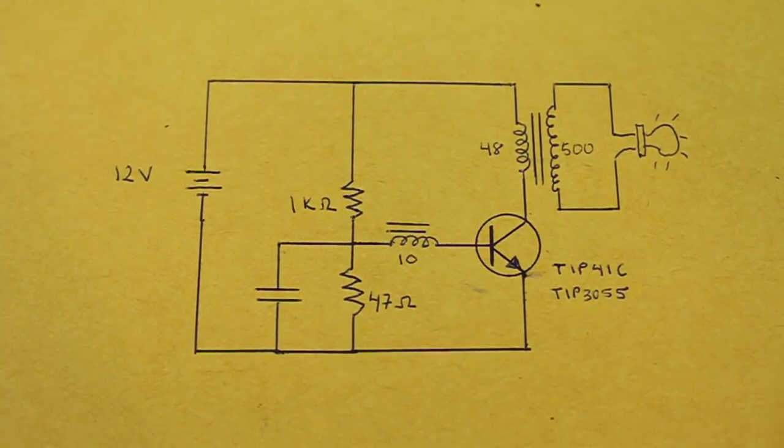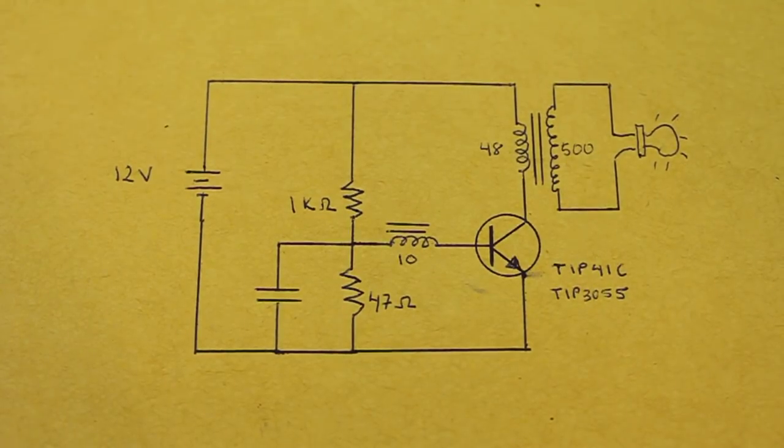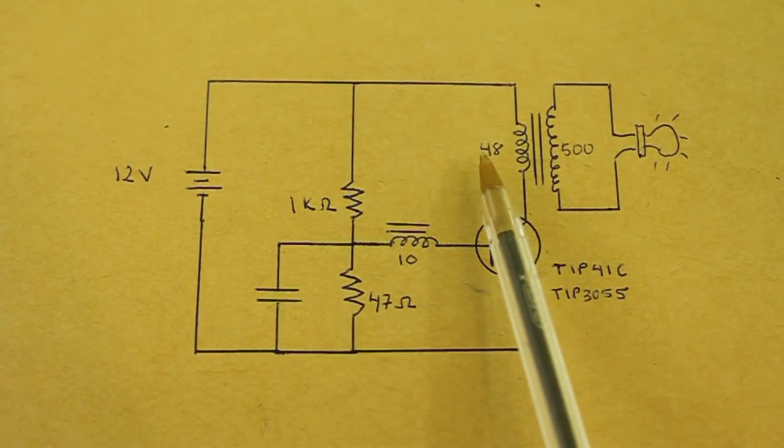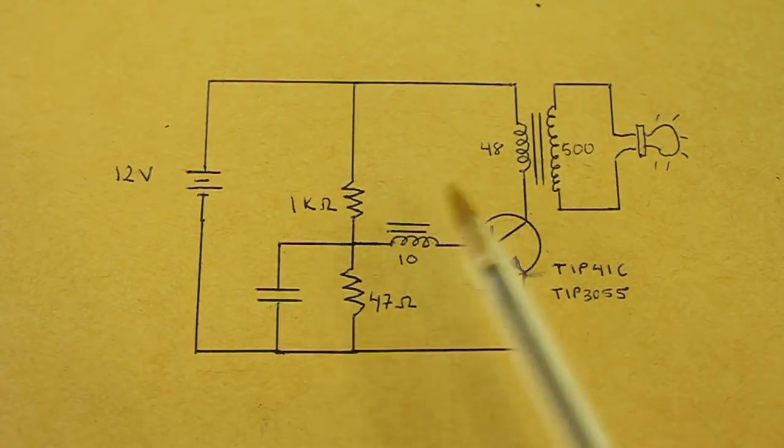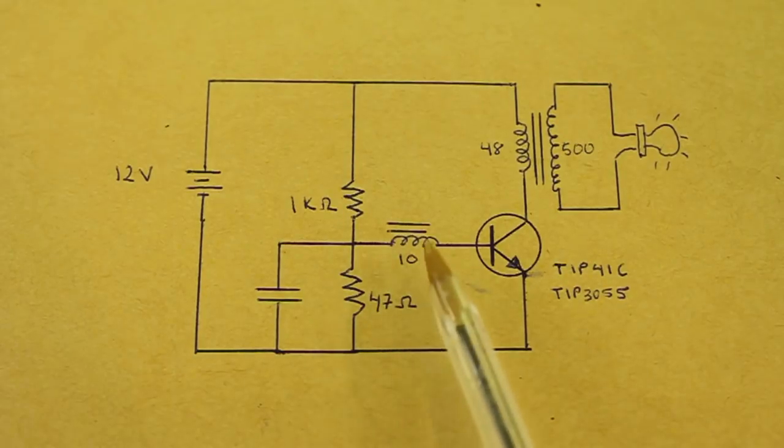This is the schematic. Here we can see the output transformer that raises the voltage. The primary has 48 turns and the secondary 500 turns, and we have another coil of 10 turns that is the feedback coil.